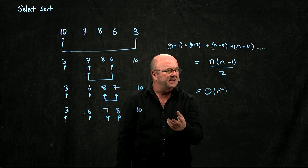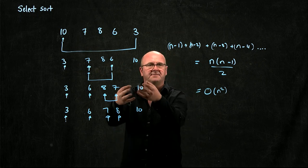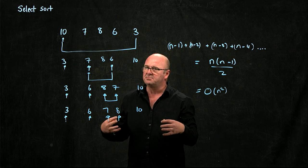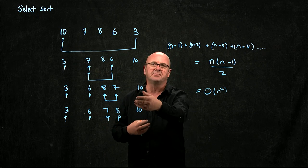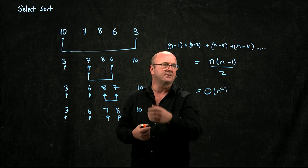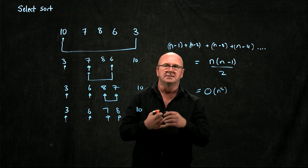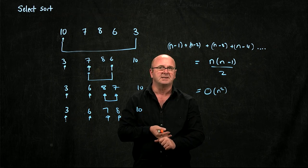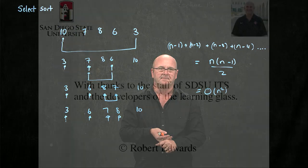And we can do it in place, because we don't have to take everything out, make a new copy of the list, and then put it back in. So it's in place, and its best, worst, and average complexity is O(n²).